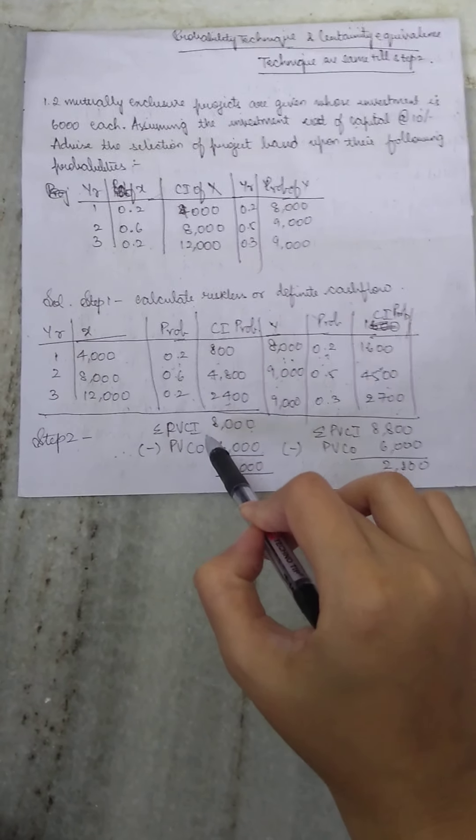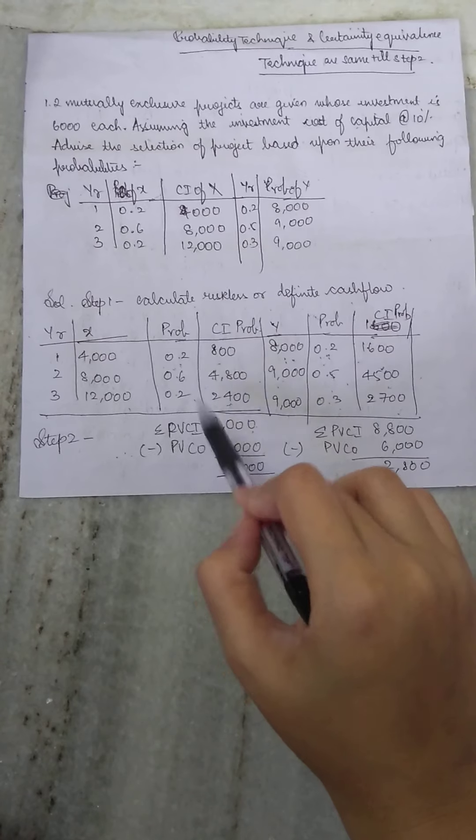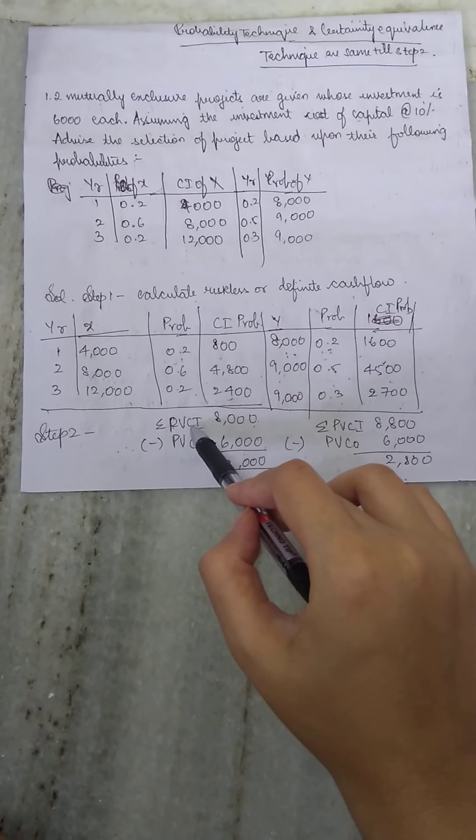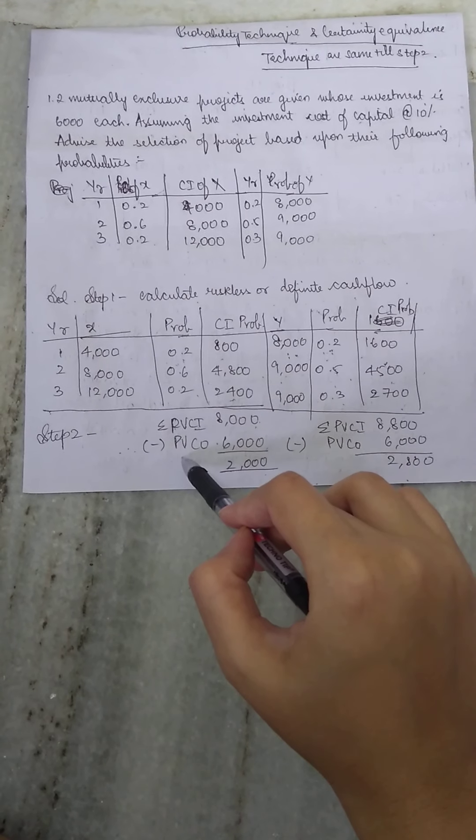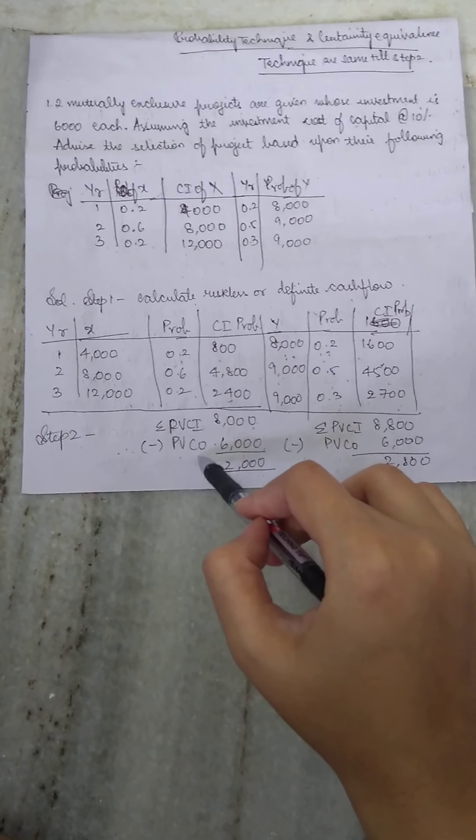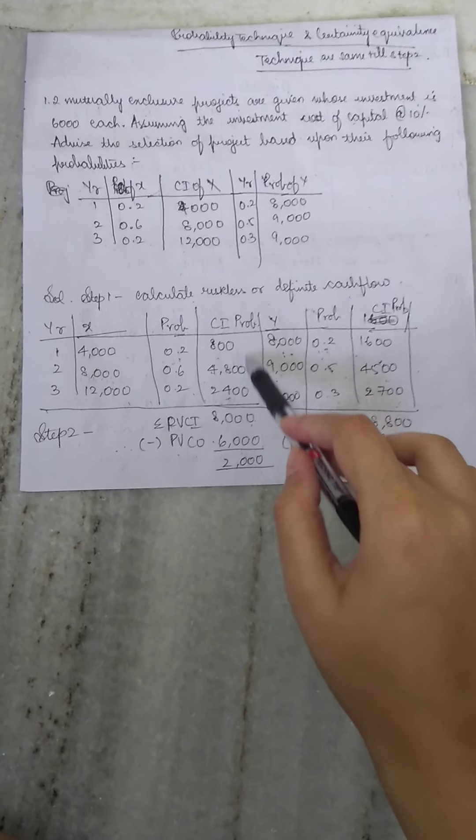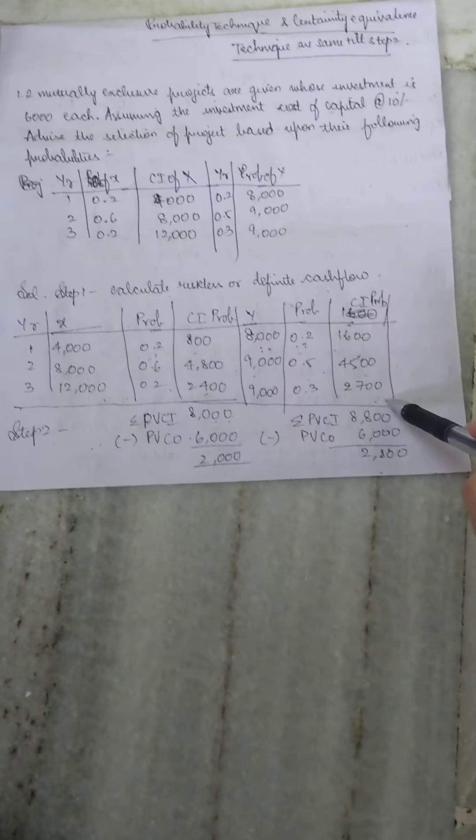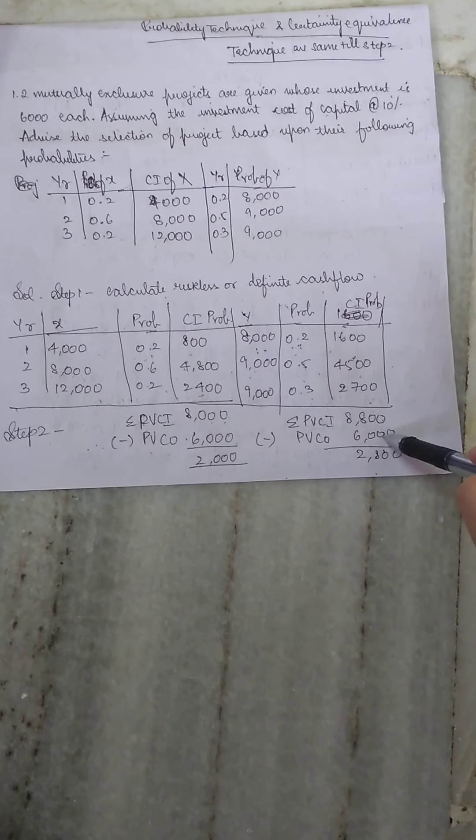Now NPV, what is the formula for NPV? Sum of, that is adding all these, you get sum of present value of cash inflows minus present value of cash outflow, that is your invested amount. So if you add all these values you get 8000 minus 6000, that is 2000. And over here you have 8800 minus 6000, that is 2800.